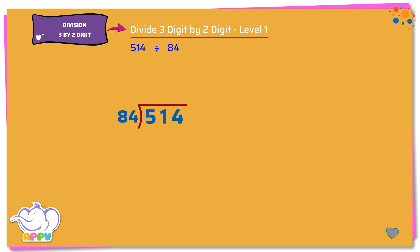So we consider the ones digit as well. We figure out how many 84's does it take to make 514 or almost 514. To estimate the quotient, we round off 84 to the nearest tens, which is 80, and then divide 514 by 80, which is 6.